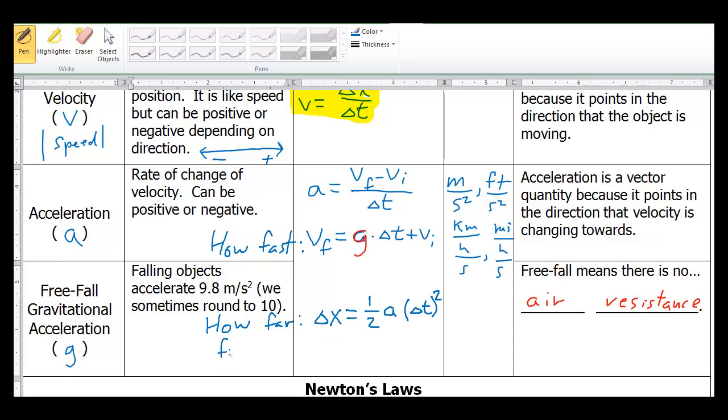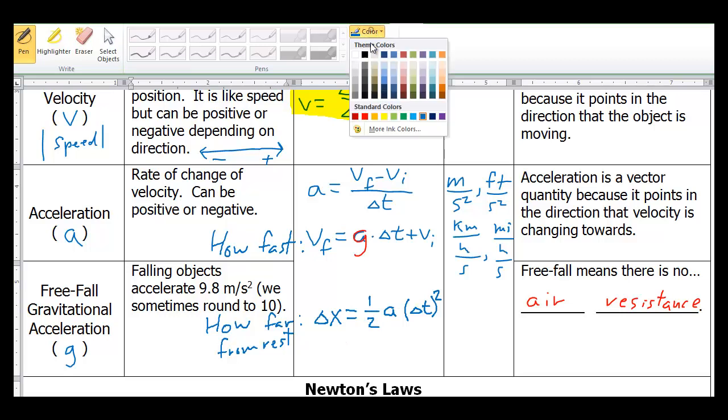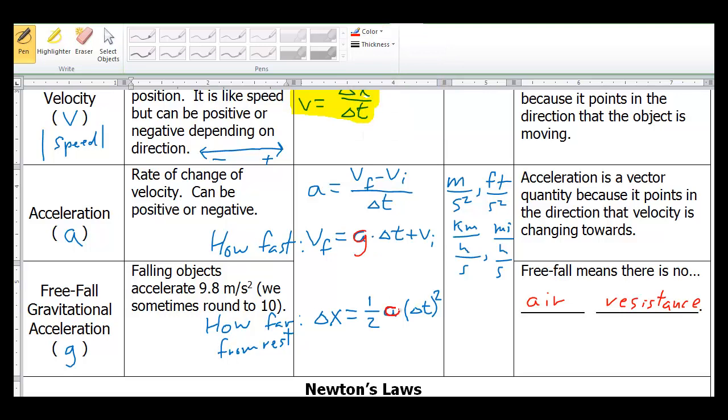And I want to clarify, this is from rest. If the object has some initial velocity, there is another term that would get added to this. But we're not going to get into that. So similarly, if we're talking about something that's free falling, this acceleration can be our value for g.